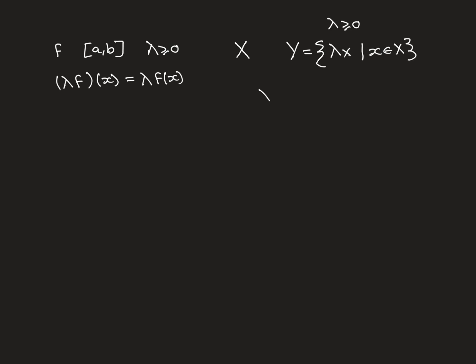This is actually the reason we have to split part one and part two into two separate results, because this result is very different when lambda is negative. To give an example, let X be the closed interval [1, 2]. So on the real line, here's 0, here's 1, here's 2 — it's the set of all real numbers on this interval including the boundary points. Let lambda equal 2. Then the set Y would be all things in X multiplied by 2, giving the interval [2, 4]. When you multiply 1 by 2 you get 2, multiply 2 by 2 you get 4, and everything in between maps accordingly.